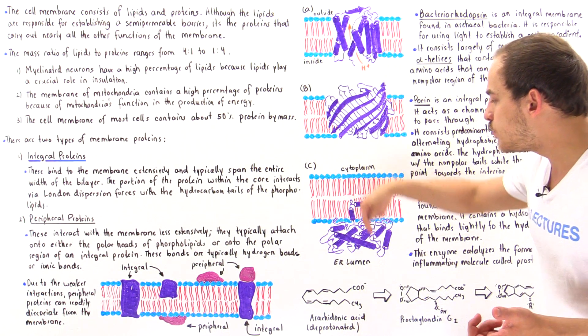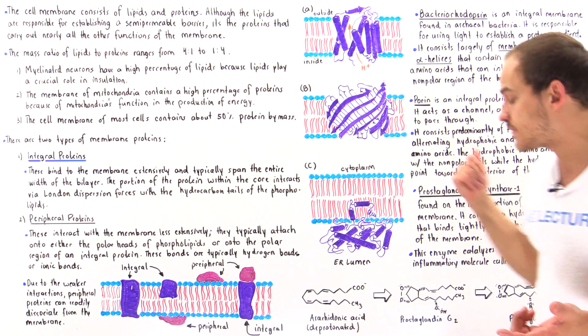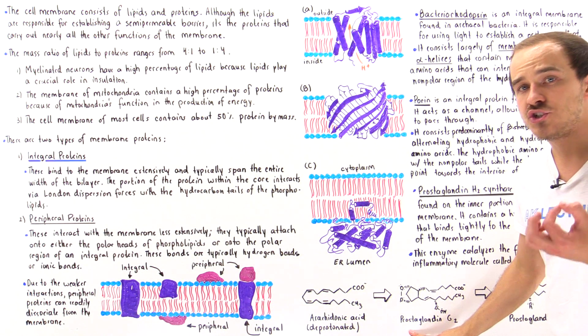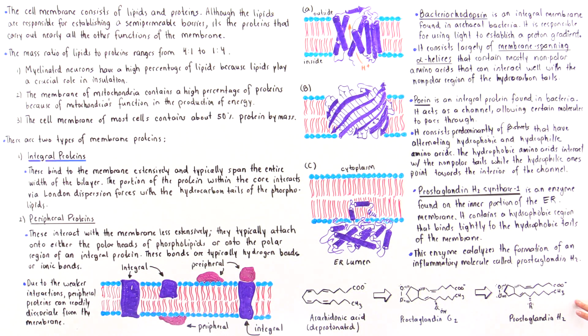And so this moves into the active site and is transformed into prostaglandin GH and then that is transformed into prostaglandin H2.